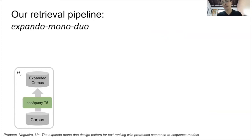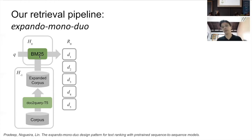In the first part — zero-shot finally works — we're quite fond of this pipeline called Expanded Mono Duo, which we've applied to many competitions. It works as follows: we have a doc-to-query model that tries to predict what kind of questions a document might answer. We feed a corpus into doc-to-query, it predicts many queries per document, and we append those questions to the document text to form an expanded corpus.